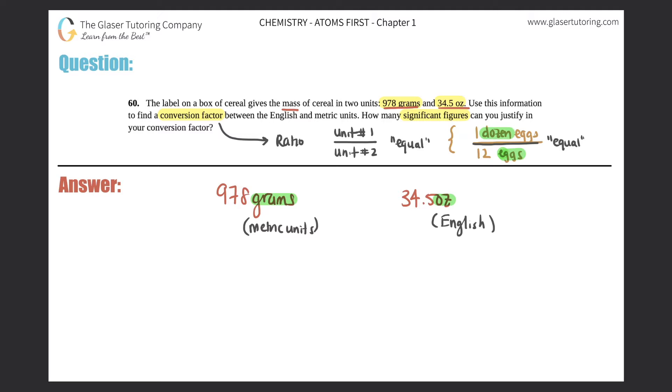Now all we have to do is just find a conversion factor between the metric unit, which is grams, and the English unit, which is ounces. We just have to set a ratio. They didn't say specifically which one should be in the numerator or on top, so I'll just do both of them quickly for you. You could either say that 978 grams is equal to 34.5 ounces, and since they're equal to each other you could flip the ratio, so you could say 34.5 ounces is equal to 978 grams.